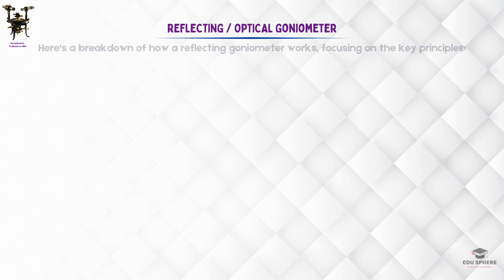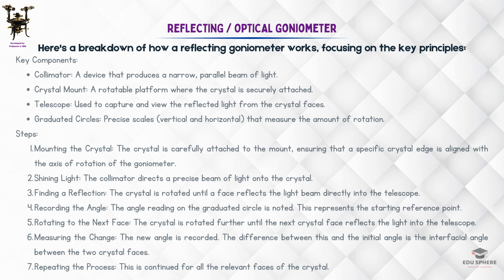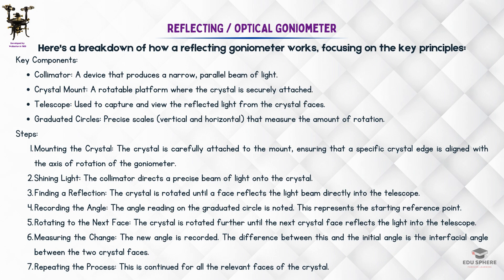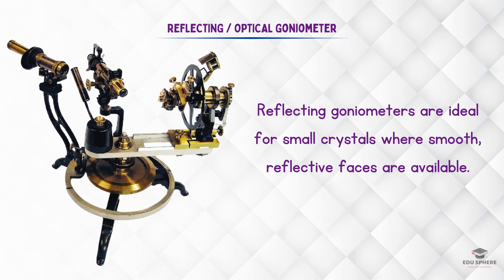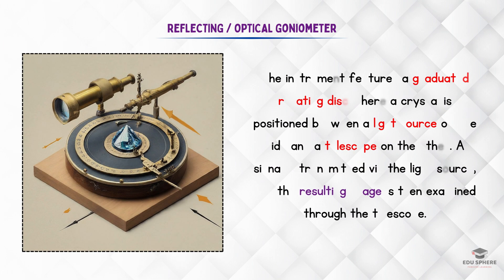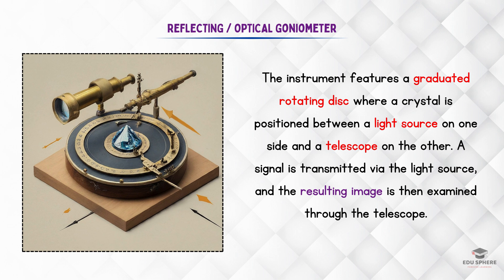Here's how a reflecting goniometer works. A crystal mounted on the instrument can be rotated about a zone axis. This allows it to reflect light from its faces into a telescope. The angle through which the crystal must be rotated to reflect successive beams of light from two adjacent faces into the telescope determines the angle between the faces. The instrument has a graduated rotating disc, with a light source on one side and a telescope on the other, and the crystal is placed on the disc. A signal is sent through the light source, and the image is observed through the telescope.